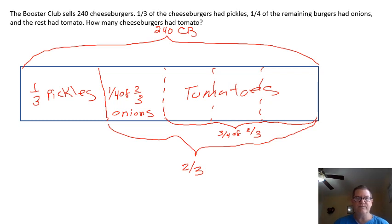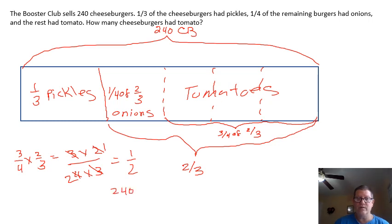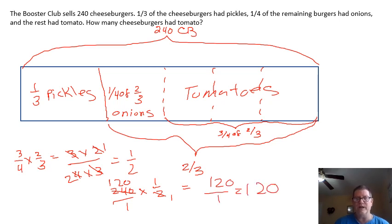Let's see how many had tomatoes. We have three-fourths of two-thirds, which equals three times two over four times three. We can take our threes out — three goes into three one time, two goes into two one time, two goes into four two times — equals one-half. So half of them had tomatoes. Overall we had 240 times one-half, which is 240 over one. Two goes into two one time, two goes into 240 one-hundred-twenty times, so that equals 120 — one-hundred-and-twenty had tomatoes.